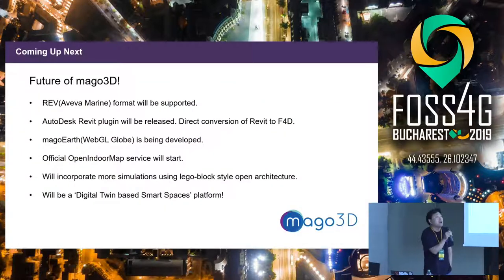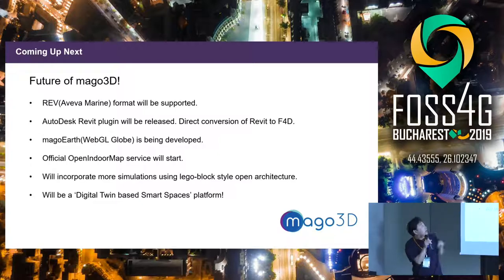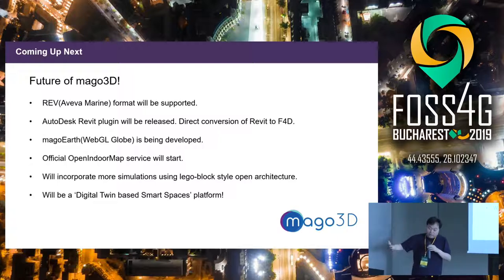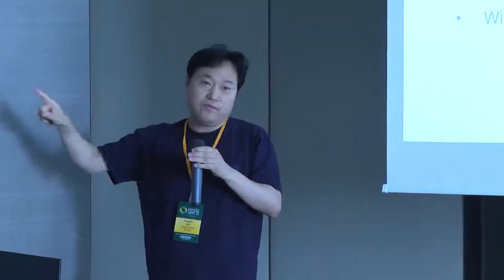For the future of Mago 3D: we are working on supporting the AVEVA format — a proprietary format from AVEVA Marine, a UK-based CAD company widely used in shipbuilding. Also, many clients ask why we only support IFC, since Autodesk Revit is the de facto standard in the BIM industry. So we are developing an Autodesk Revit plugin — clients just click the plugin, it converts Revit files to F4D, and we can service Revit files through the web.